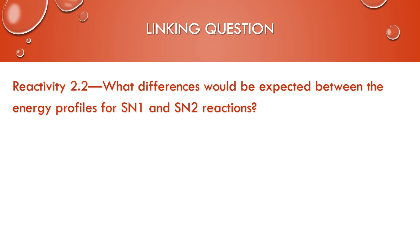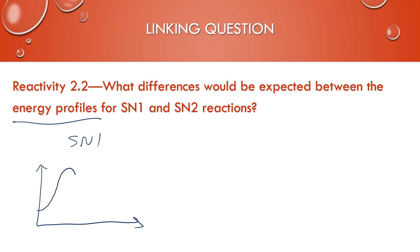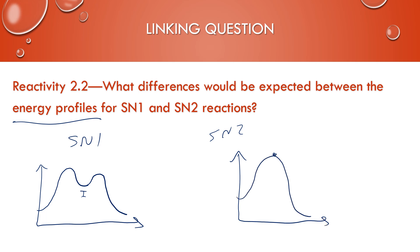This links to reactivity 2.2 — energy profiles for SN1 and SN2. SN1 happens in two steps: the first step is where the halogen leaves and forms your carbocation intermediate, and the second step is the faster step where the nucleophile attaches. SN2 happens in a single step where the transition state — where the carbon has five things interacting with it — is at the top of that hump. SN1 is two steps; SN2 is one step. Remember, SN1 is unimolecular — one thing has to have the leaving group leave first. SN2 is bimolecular — two things interact at the same time, which is why it happens in a single step.